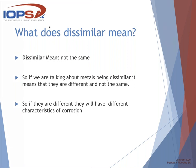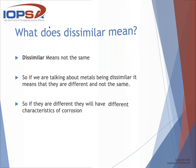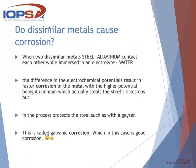When two dissimilar metals — for example steel and aluminium — contact each other while immersed in an electrolyte like water, the difference in electrochemical potentials results in faster corrosion. Salt water is a better electrolyte, which is why metals corrode much more easily near the coast. Now there's another element: when we talk about geysers, there's electricity and a current flowing through them. This results in faster corrosion of the metal with higher potential, being aluminium, which steals the steel's electrons but in the process protects the steel — this is called galvanic corrosion.